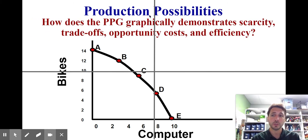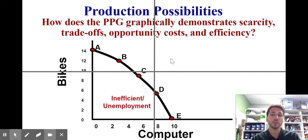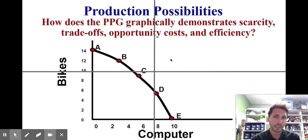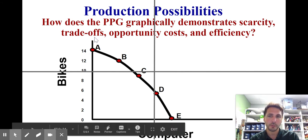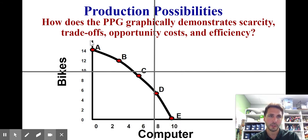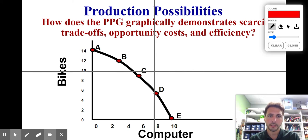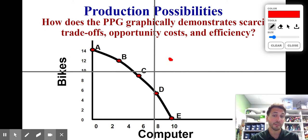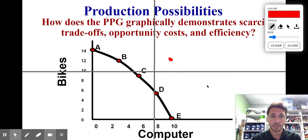This bowed-out curve demonstrates a few things. First, it demonstrates scarcity. Notice that I cannot produce beyond this curve. I can't produce, for example, 16 bicycles and zero computers because that would be a point way up here — can't do it. I can't produce a point way out here because it's beyond my productive capacities. I just don't have the resources to do it. So it demonstrates that we have a limited amount that we can produce as a nation — scarcity.